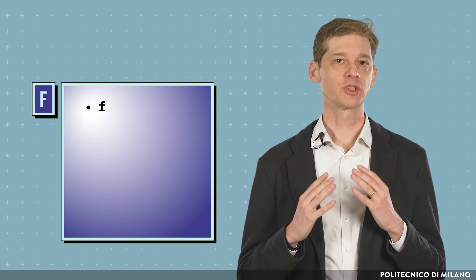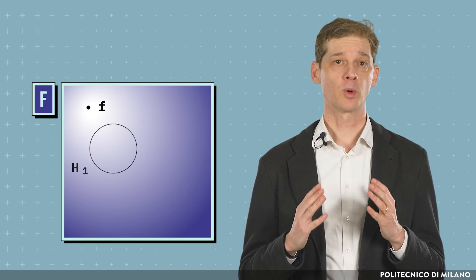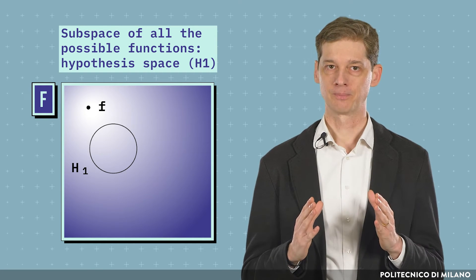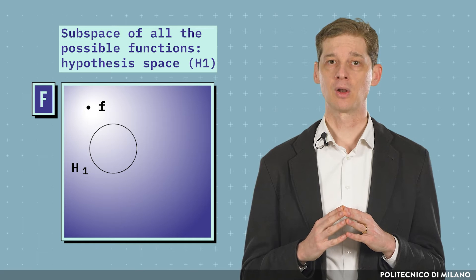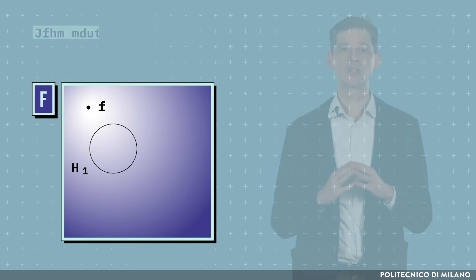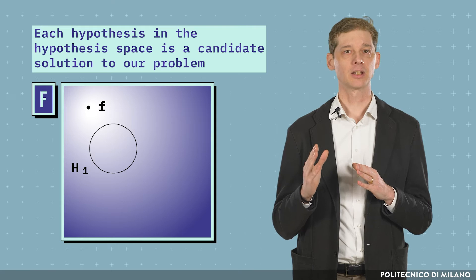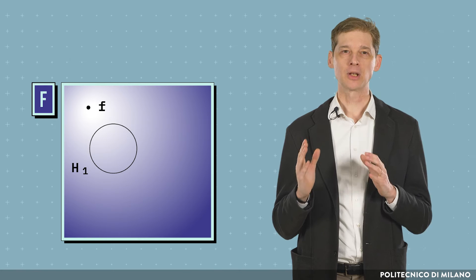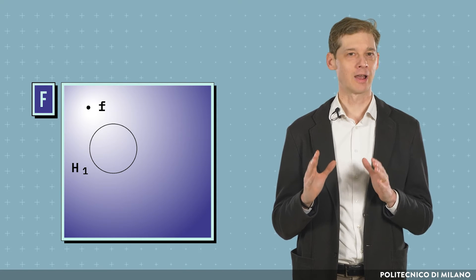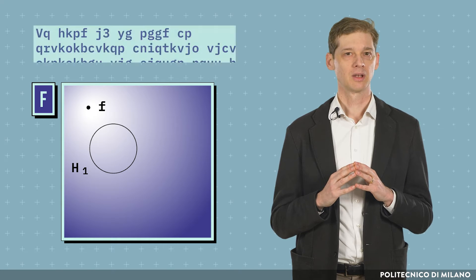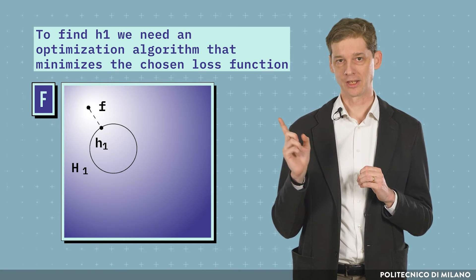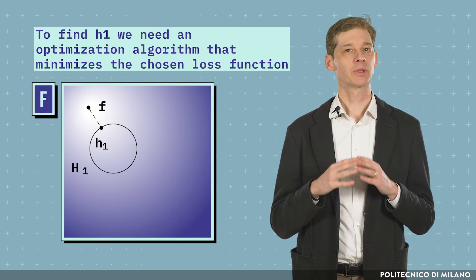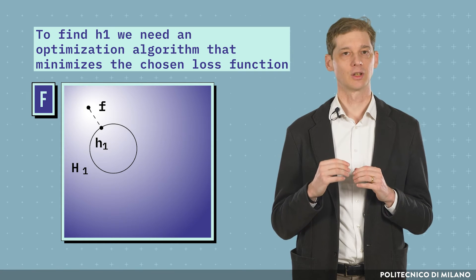The search for a function that approximates f is performed over a subspace of all possible functions, called hypothesis space, denoted in the graph by capital H1. Each hypothesis in the hypothesis space is a candidate solution to our problem. As shown in the graph, the hypothesis space may not contain the desired function f. Finally, to find the best hypothesis, lowercase h1, inside our hypothesis space, we need an optimization algorithm that minimizes the chosen loss function.